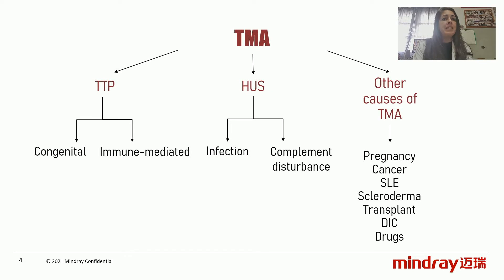The entities we must differentiate when in the presence of TMA are thrombotic thrombocytopenic purpura, hemolytic uremic syndrome, and other causes that present with microangiopathic hemolytic anemia such as those mentioned in this slide. TTP is a medical emergency; it should be considered and treated immediately since it has a mortality of 19% without treatment in the acute stage. It can be congenital or immune mediated. Congenital TTP is more frequent in pediatrics. The differential diagnosis should be made mainly with hemolytic uremic syndrome associated with complement alteration, since the one associated with infection is mainly related to E. coli O157 and is the main cause of TMA in pediatrics.